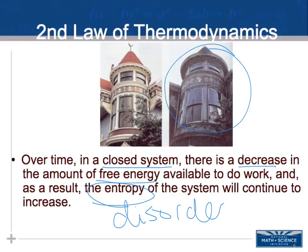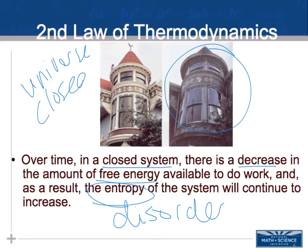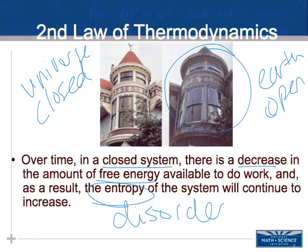The parts of the building crumble, rust, and fall apart. The universe is a closed system, and so the universe has a constant increase in entropy — the free energy available in the universe is decreasing while entropy is increasing. However, Earth is not a closed system; Earth is open because it constantly receives energy from the sun.